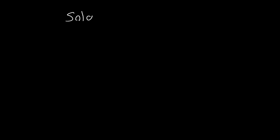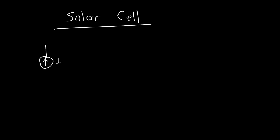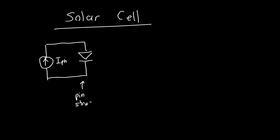In the last video, we figured out a basic model for a solar cell: just some current source which depends on the incident solar radiation — that's our photocurrent — and some diode. This diode is just the PIN structure of a traditional solar cell.